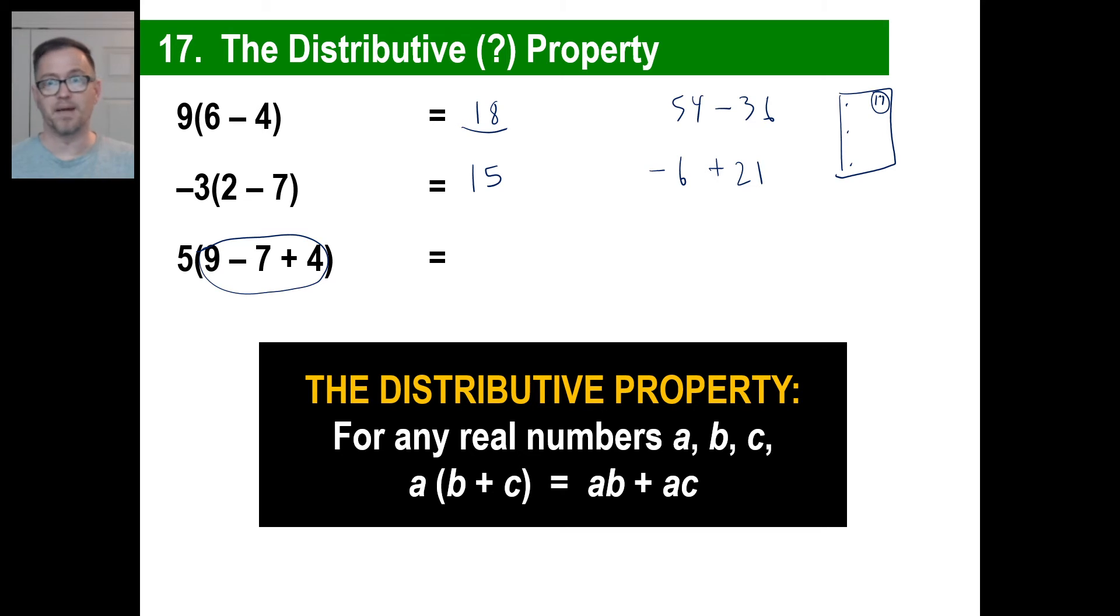That's the distributive property. Any real numbers, that's all we're messing with this year is real numbers, A, B, and C. If you multiply A, and in parentheses, B plus C, you will distribute the A. First, you'll distribute it to the B and get A times B. Then you'll distribute it to the C and get A times C right here.